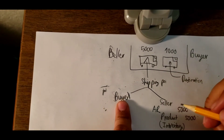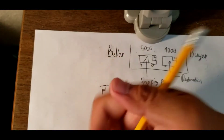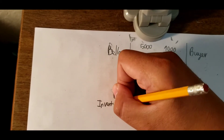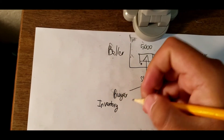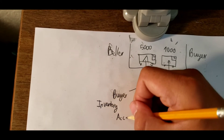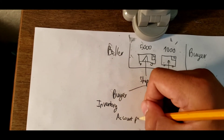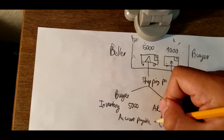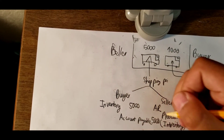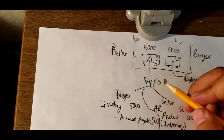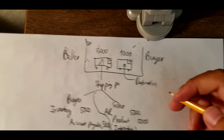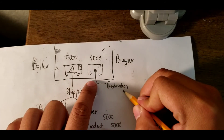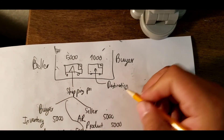For the buyer under shipping point: we increase inventory and we have accounts payable — five thousand and five thousand. That is about the shipping point.